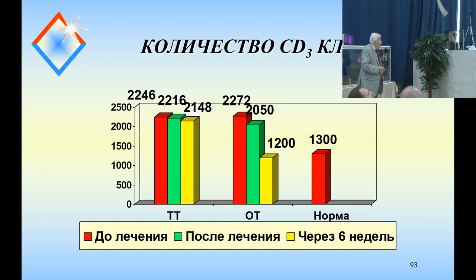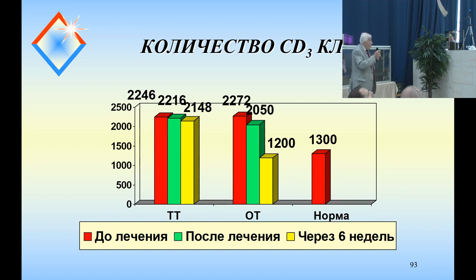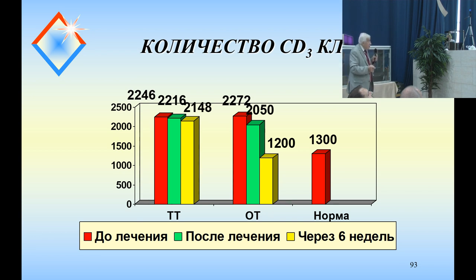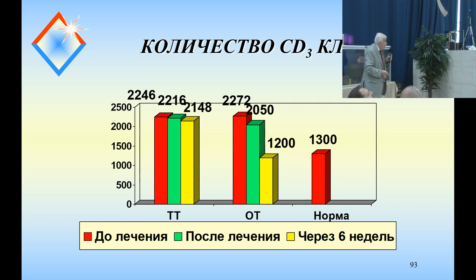The count of CD3 cells — just as you can see, the norm is 1300, and 1200 is the result after ozone therapy.